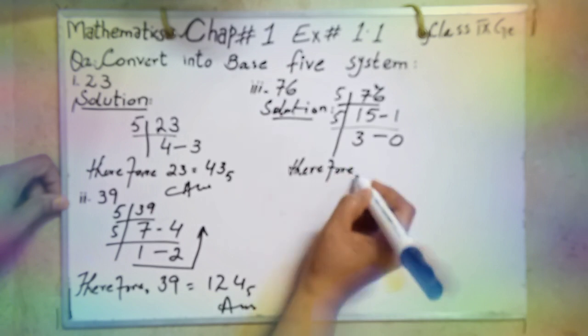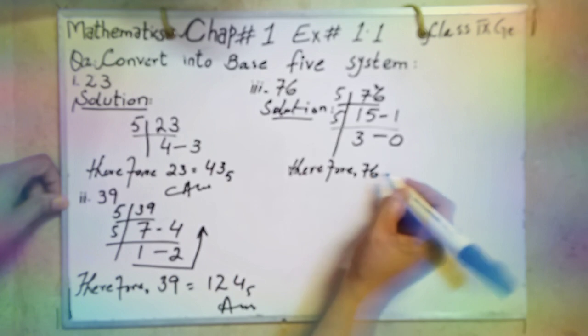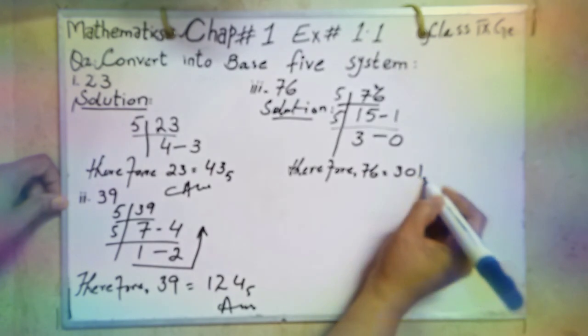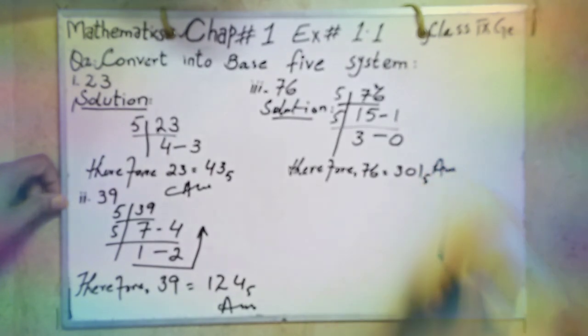Therefore, 76 is equal to 301 base 5. Third part finish.